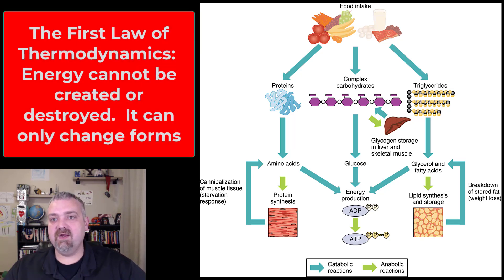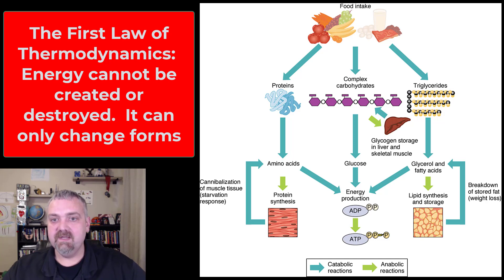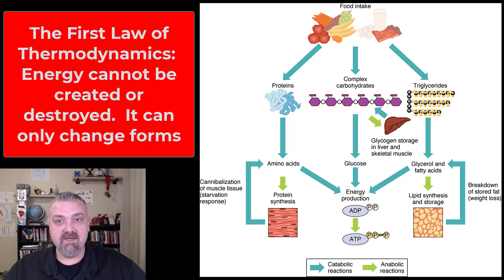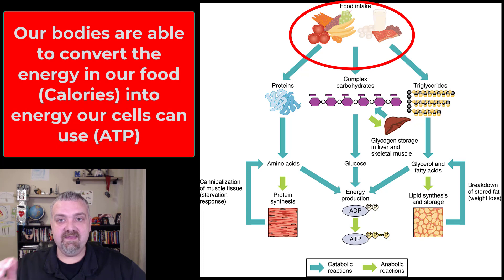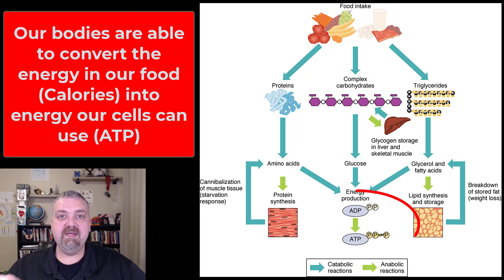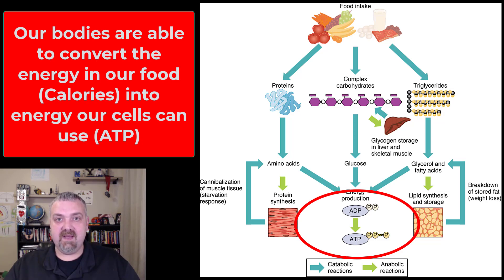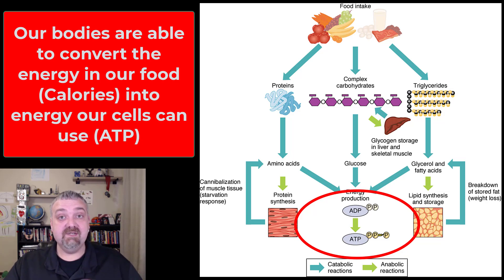The last number I saw, the average American eats 1,996 pounds a year. So this first law of thermodynamics — that energy cannot be created or destroyed, it can only change form — is the reason we have to eat. As you can see here at the top, we eat food, and in the end, food becomes ATP, adenosine triphosphate, the primary cellular energy currency that we use.